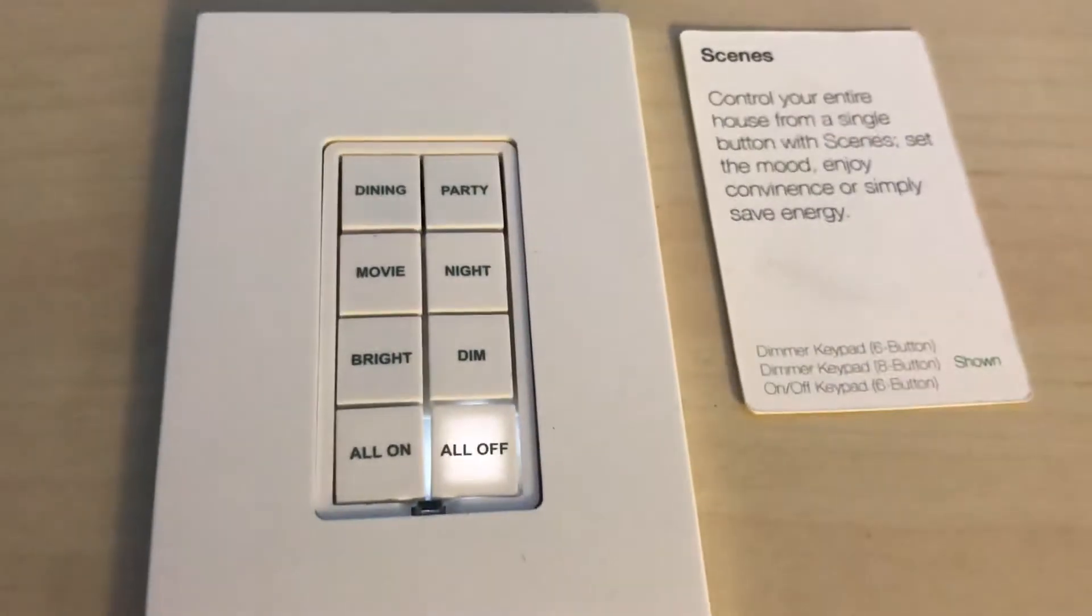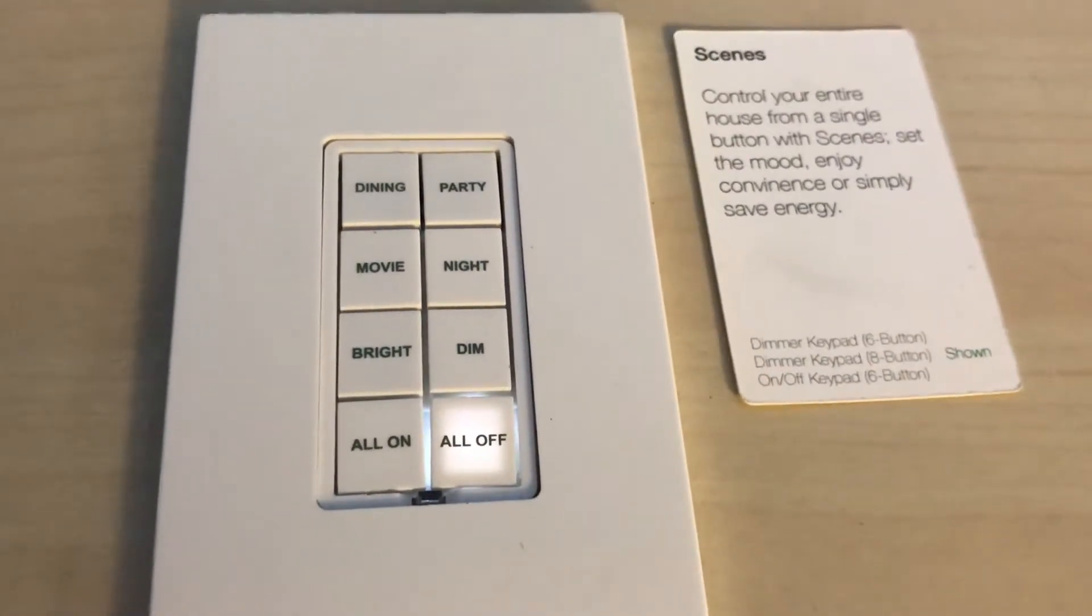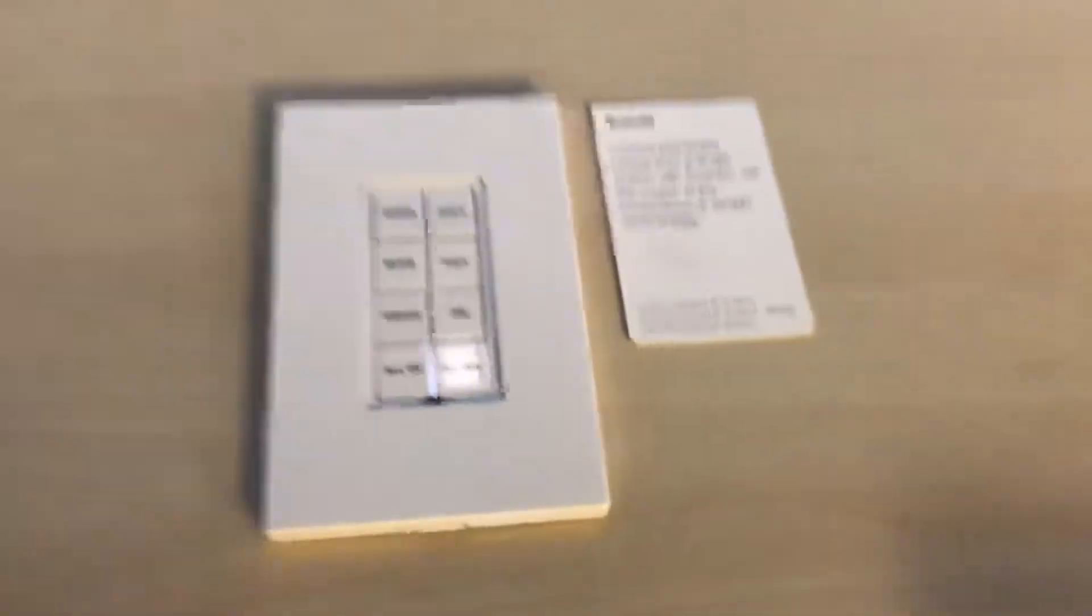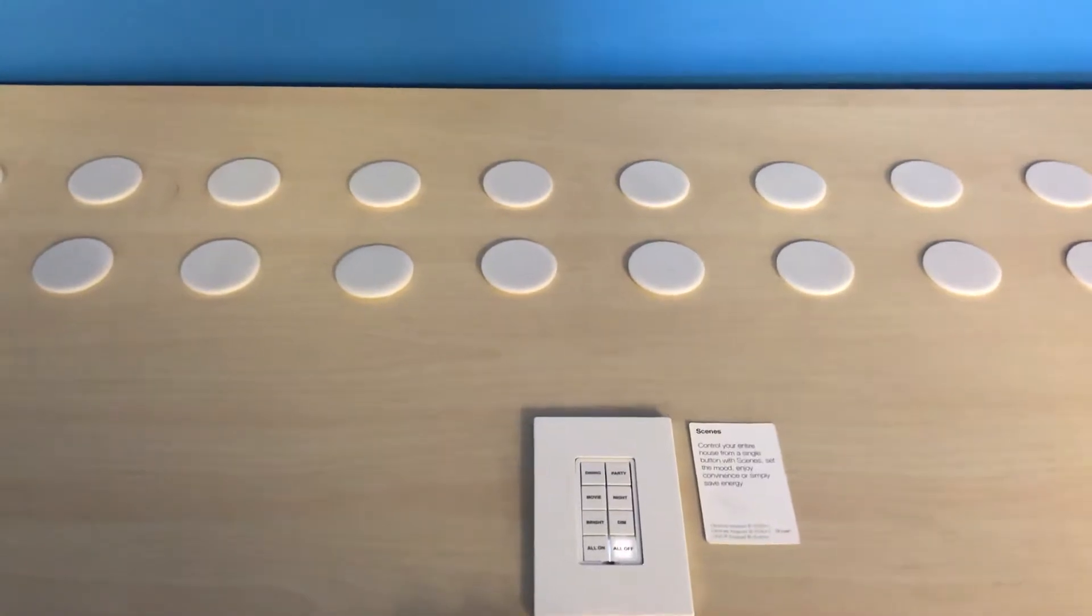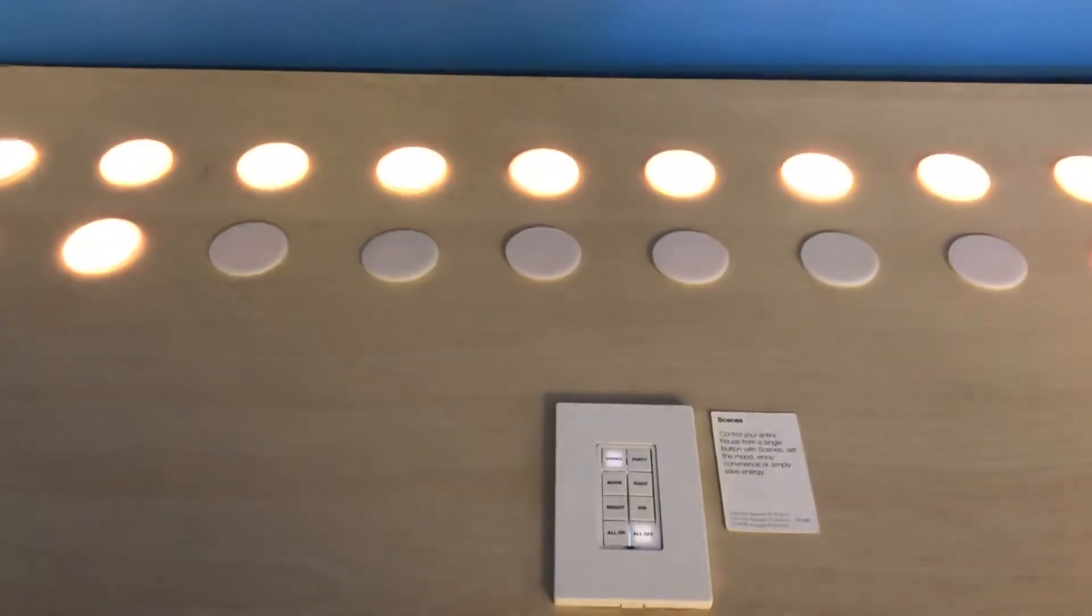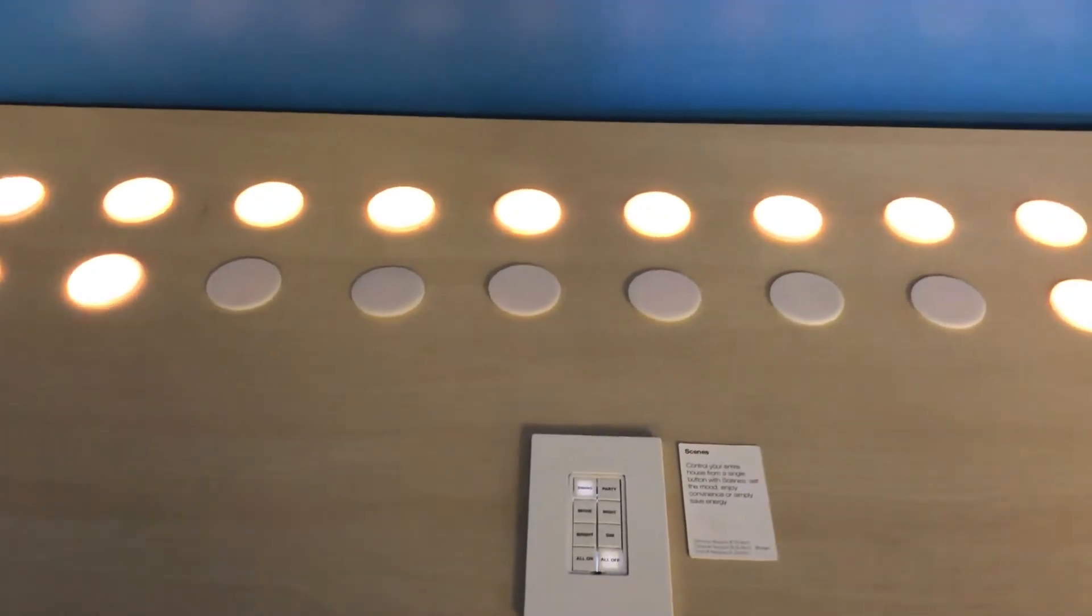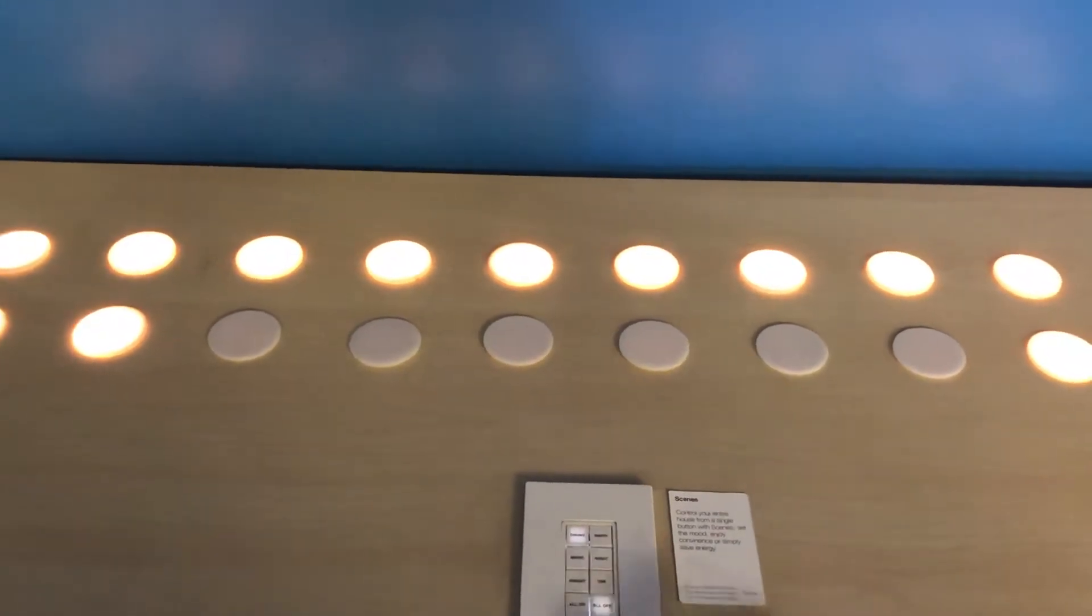I'll just go ahead and quickly run through the demo. So if I push, there's the first one which is dining, which does sort of a perimeter of lighting around it, leaves off some lights that are in the core area that don't apply.